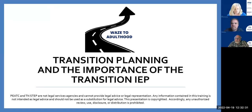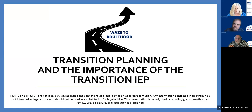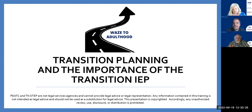Throughout this presentation we're going to refer to parents quite a bit, and we're using the term parents as really a catch-all phrase that refers to birth, adoptive, foster, and kinship parents, grandparents, guardians, and other family members who have educational decision-making authority for the child or youth. We also use the terms children, youth, and young adults kind of interchangeably throughout the training. Some children and youth are going to be over age 18, but IDEA uses the terms child or children to refer to youth and young adults involved in the transition planning to adult life.